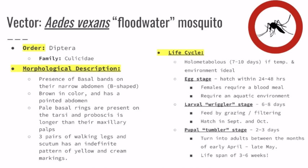In the slide, we're going to have some pictures of the mosquito where you can see these characteristics. Now we're going to talk about its life cycle, which could usually take about seven to ten days, given that the temperature and environment is ideal. First, we have the egg stage, which usually hatches between 24 and 48 hours. For this to happen, the female mosquito must have a blood meal and also requires an aquatic environment for the eggs to be laid on.